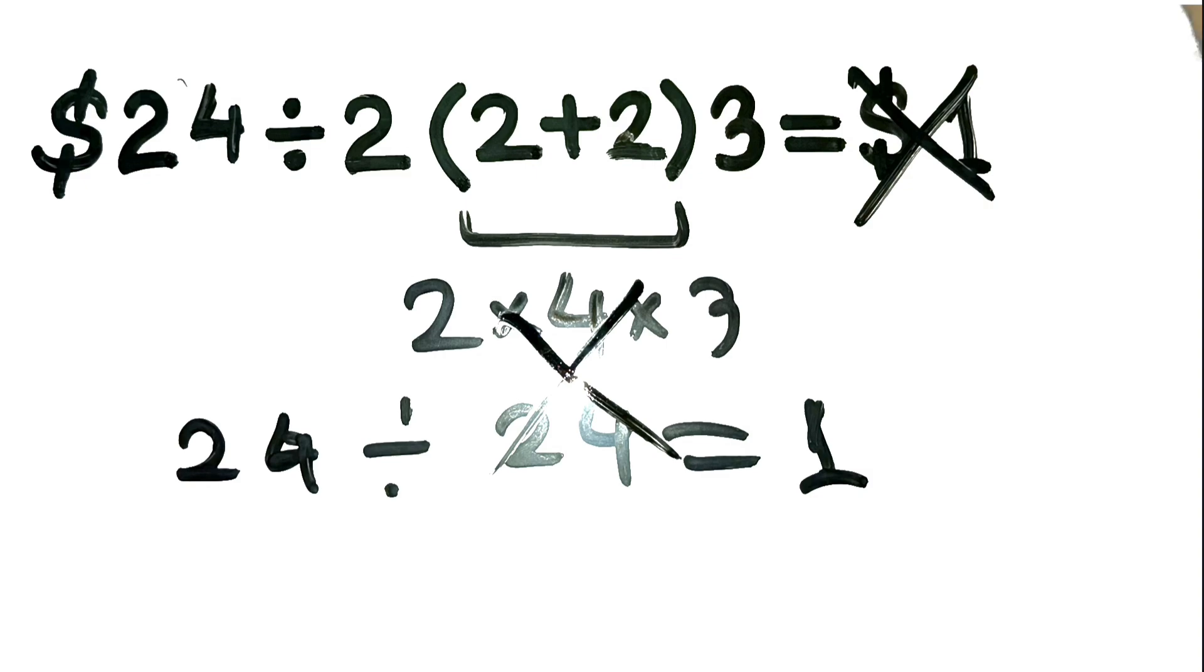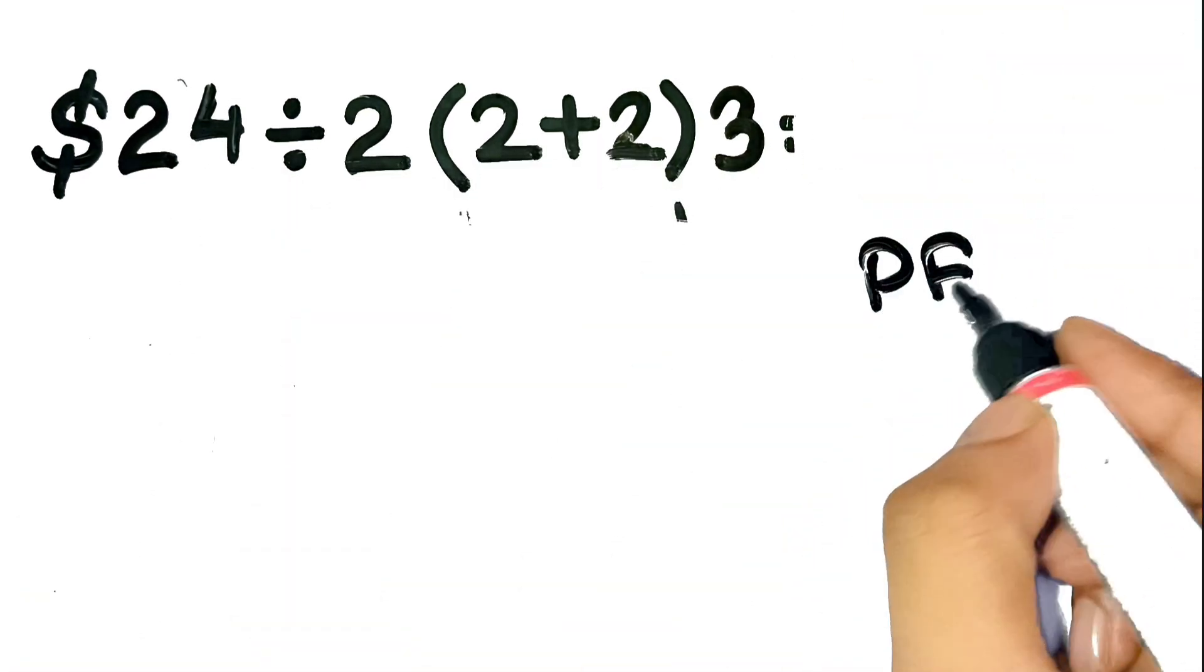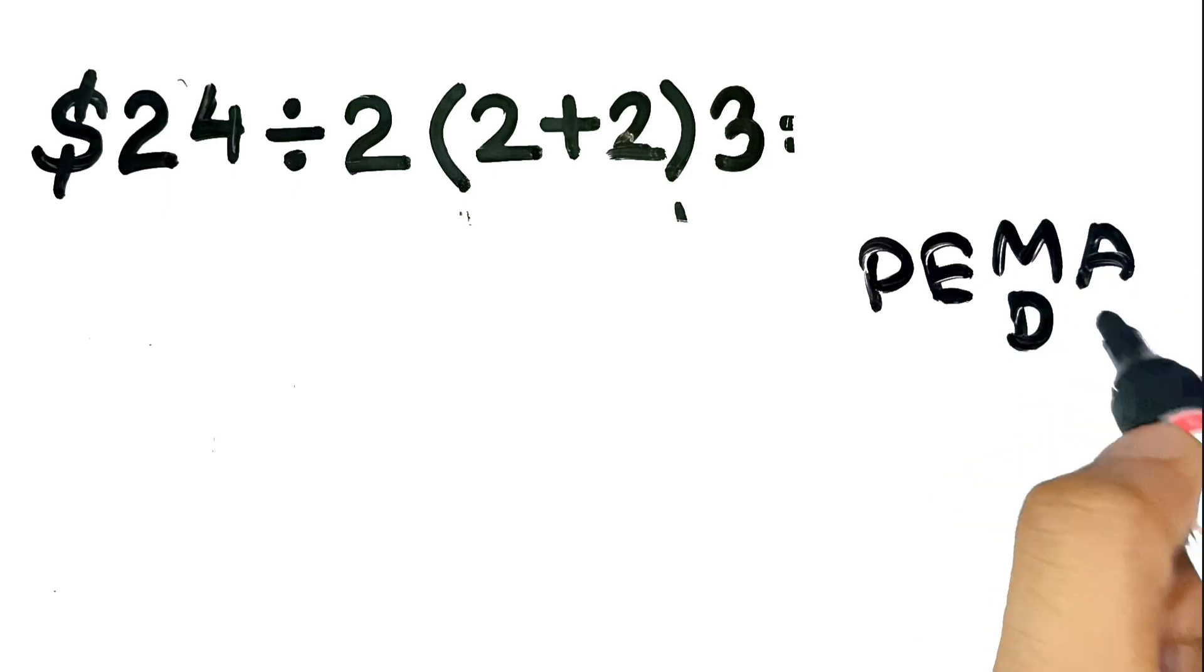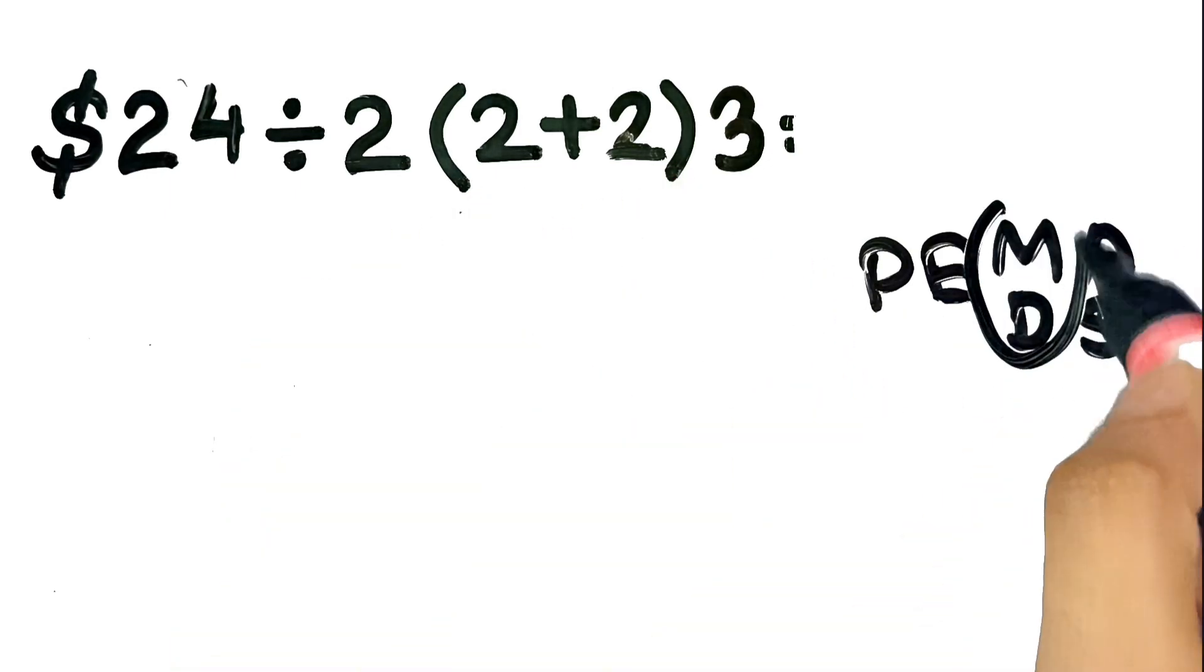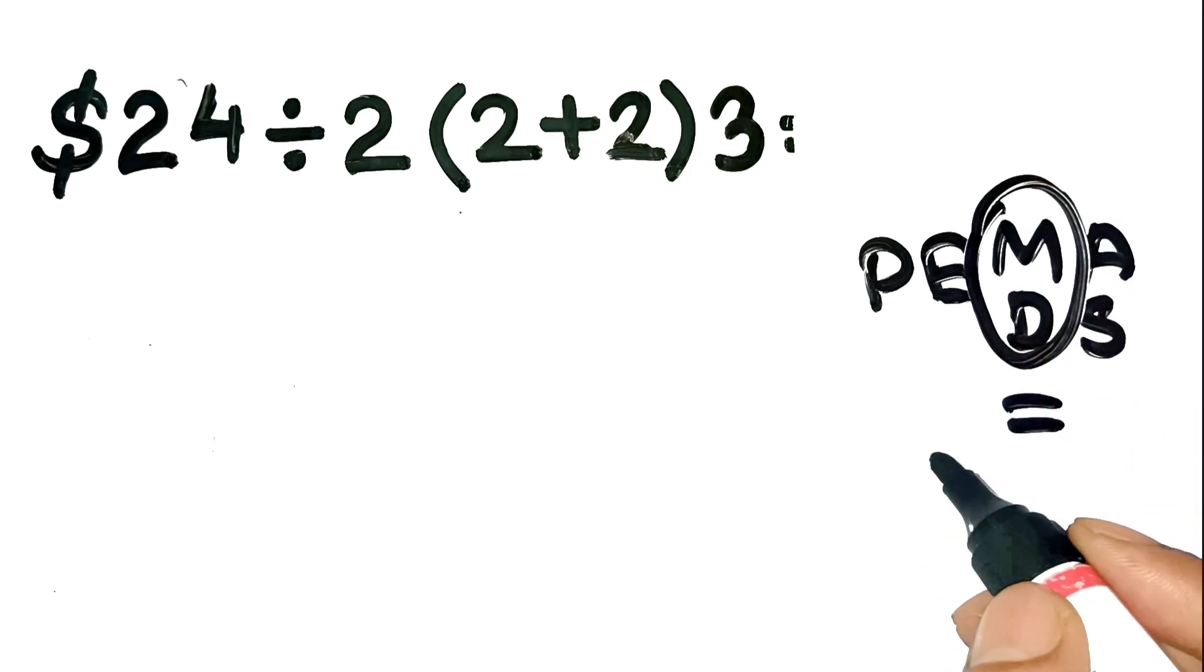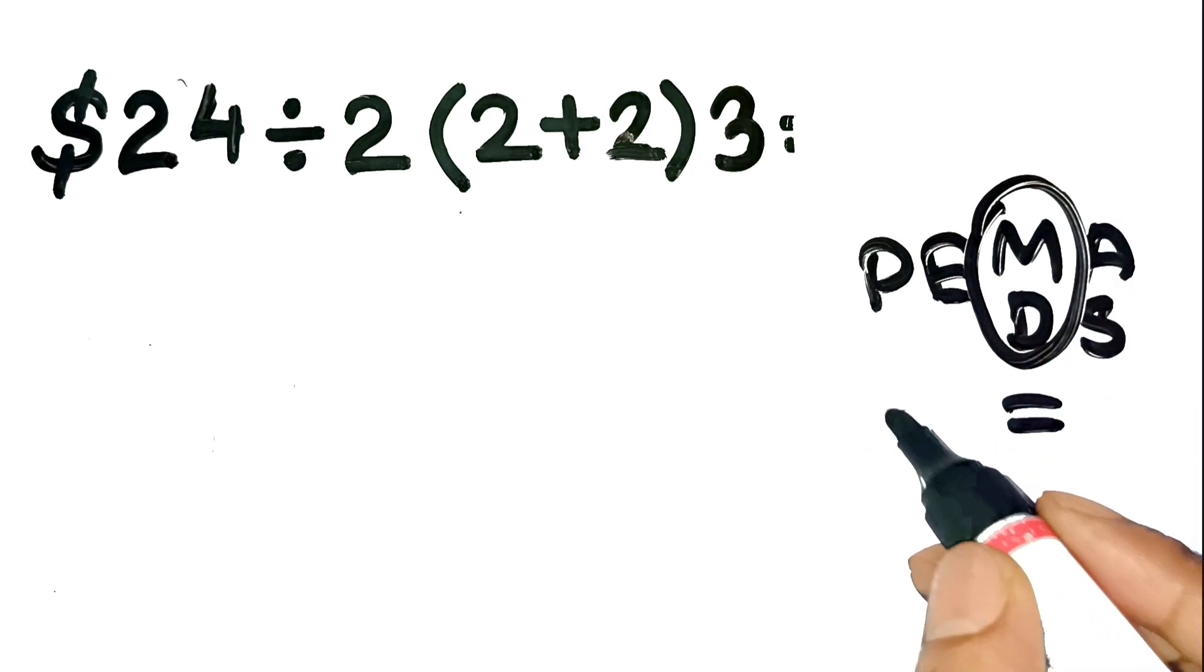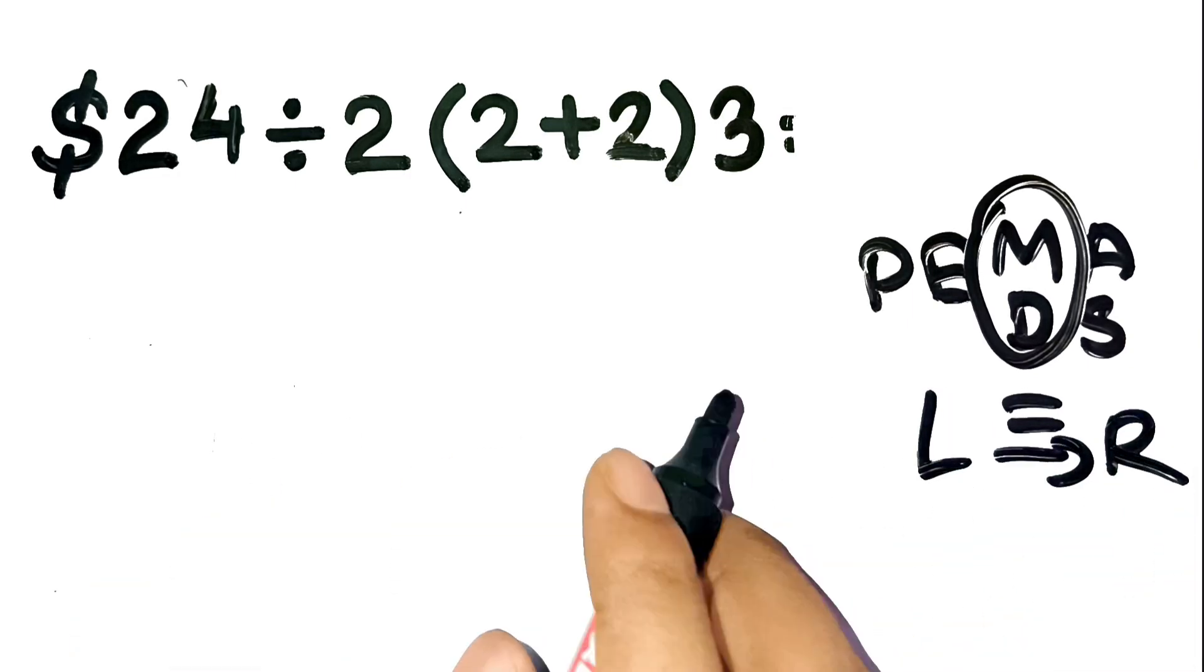This is where PEMDAS comes in. That's parentheses, exponents, multiplication, division, addition, and subtraction. But here's the catch. Multiplication and division have equal priority. You don't just jump to multiplying because it's next to parentheses. You go left to right. That's what most people miss.